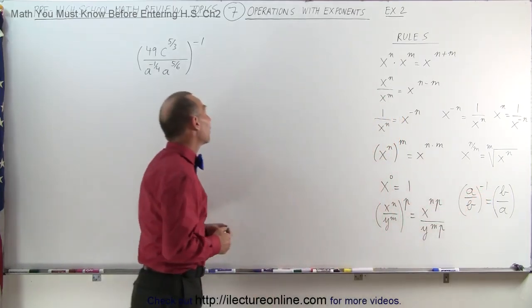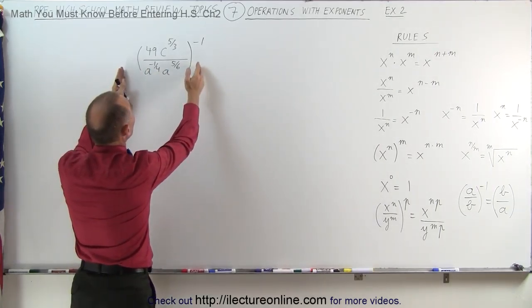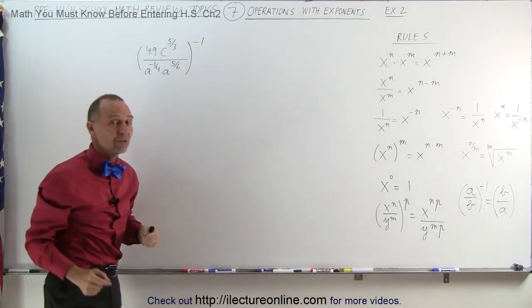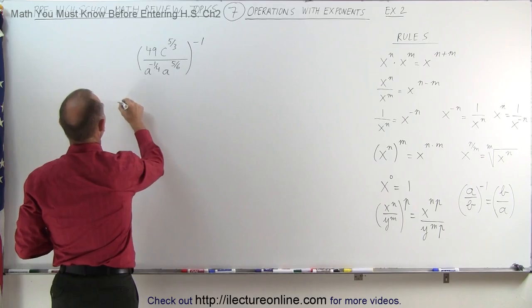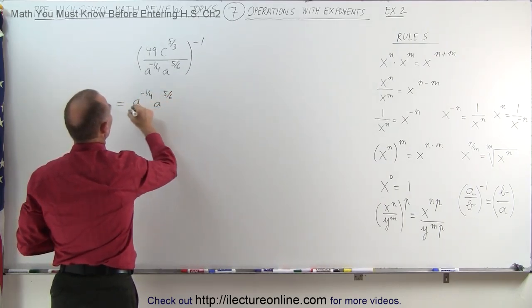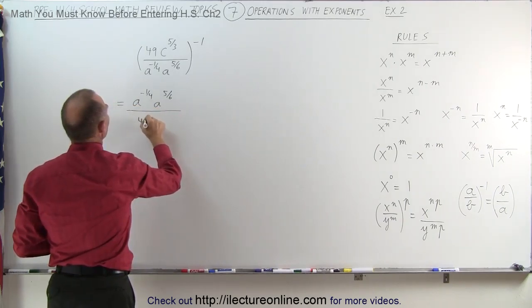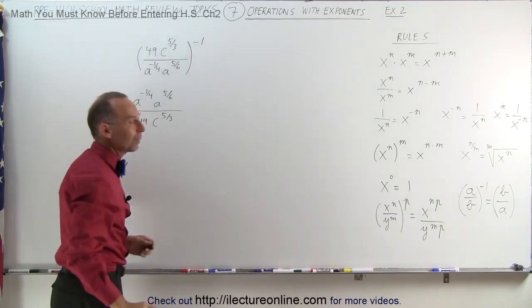The reason I added that rule is when I look at my example here, I have a whole thing right here in parentheses raised to negative 1 power, which means I can simply turn that expression around and write it as a to the minus 1 quarter, a to the 5 over 6, divided by 49 c to the 5 thirds power, and simply then remove the negative 1 exponent.